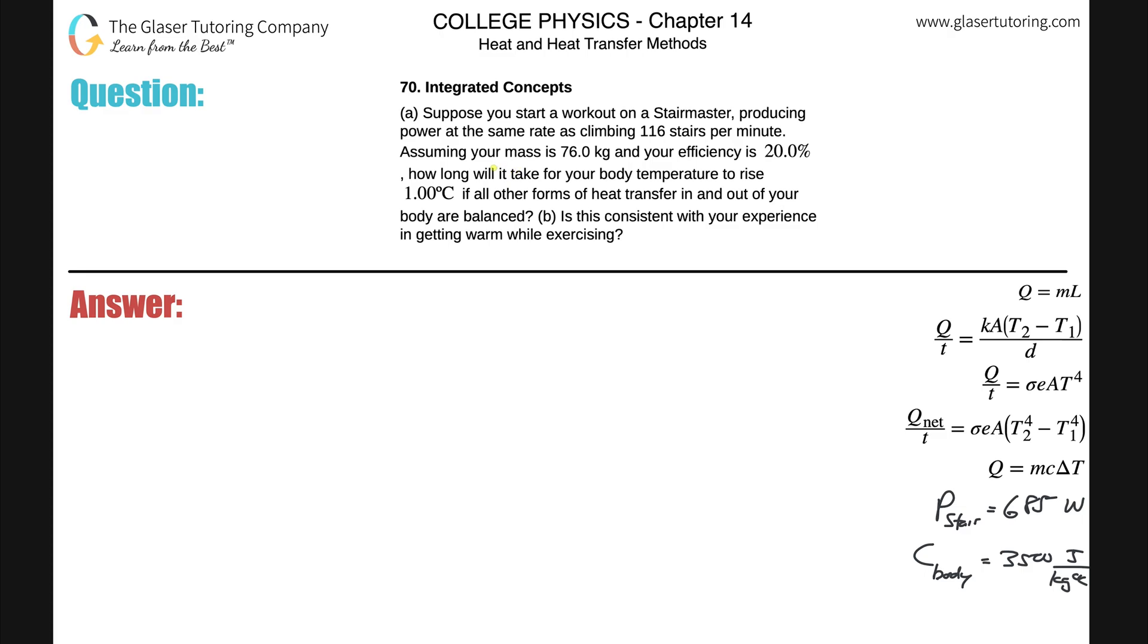Number 70, integrated concepts, letter A. Suppose you start working out on a Stairmaster, producing power at the same rate as climbing 116 stairs per minute. Assuming your mass is 76 kilograms and your efficiency is 20%, how long will it take your body temperature to raise one degree Celsius if all other forms of heat transfer in and out are balanced?